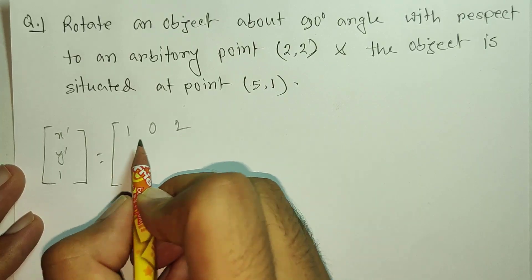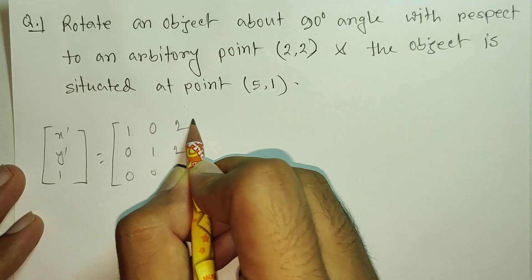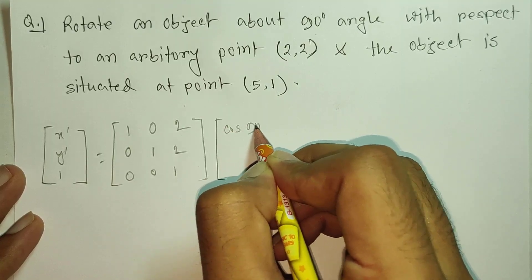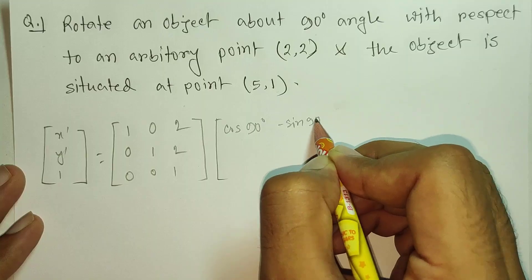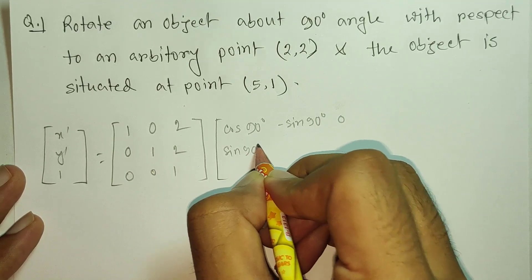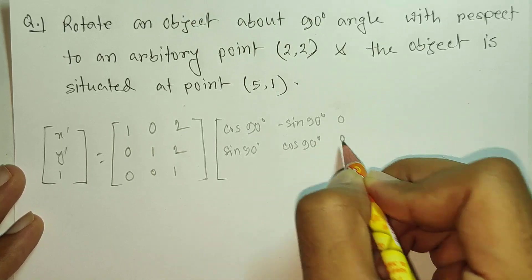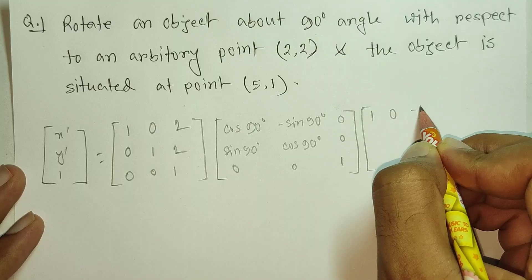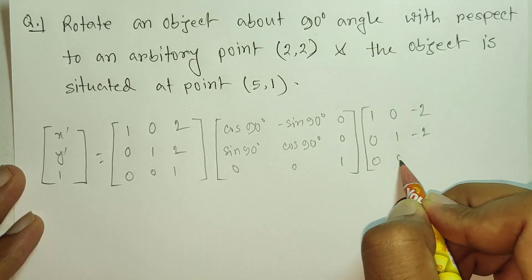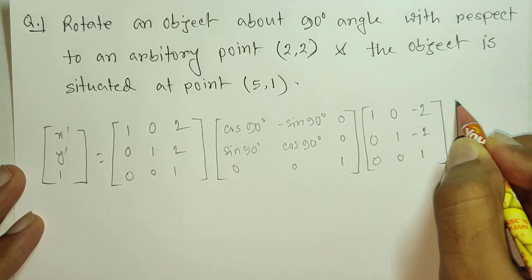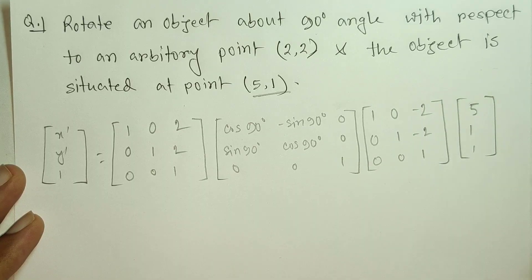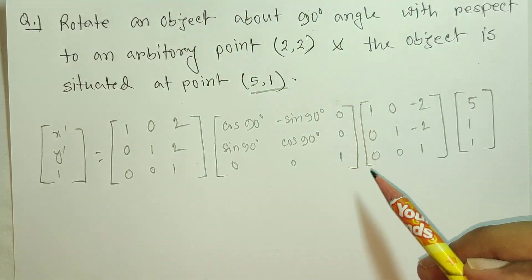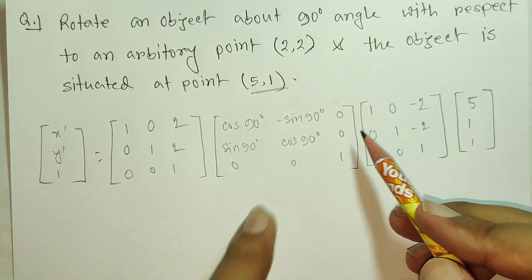We get a bit of: 0, 0, 1 again. The other way — for 90 degrees: minus sign 90 degrees, then sign 90 degrees, cos 90 degrees, and then 0, 0, 0, 1. So what do we do? We write 1, 0, minus 2; 0, 1, minus 2; 0, 0, 1 — and the last one is 5, 1, minus 1. So the first one is the translation to the arbitrary point, and then we translate back.